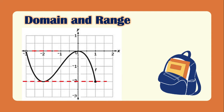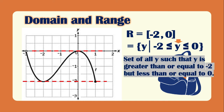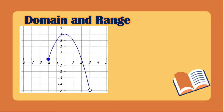For the range of this graph, we set boundaries below and above. We use a bracket because we have a solid point, and if the boundary is within the graph it is automatically included. We start with -2 and go up to 0, which is the highest peak and is included. So the range is [-2, 0], or written as the set of all y such that y is greater than or equal to -2 but less than or equal to 0.